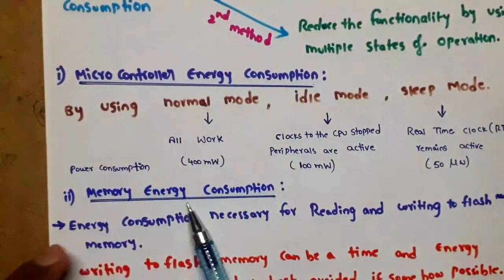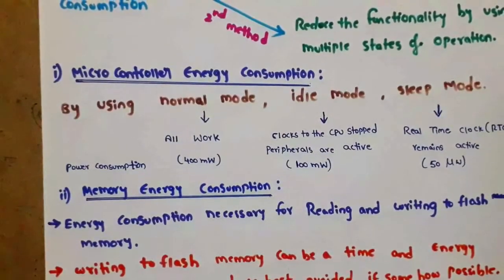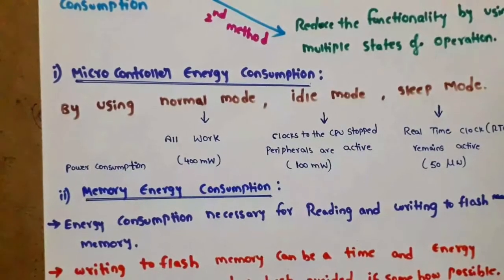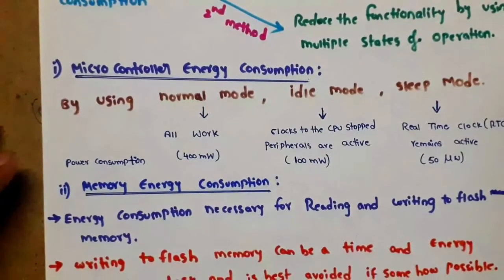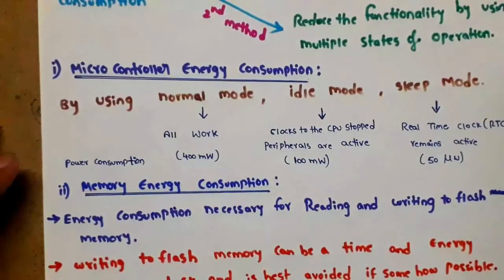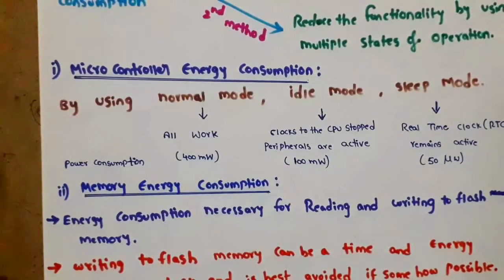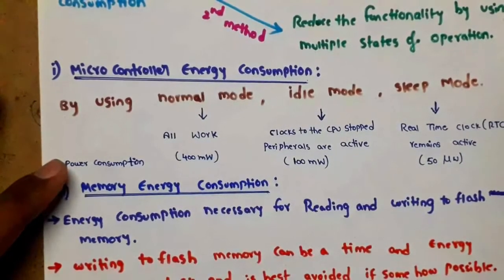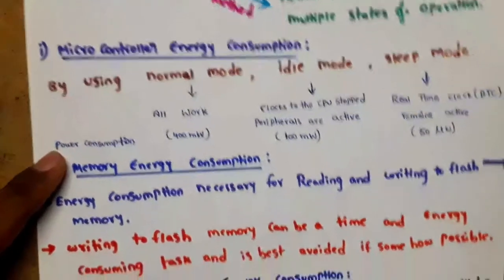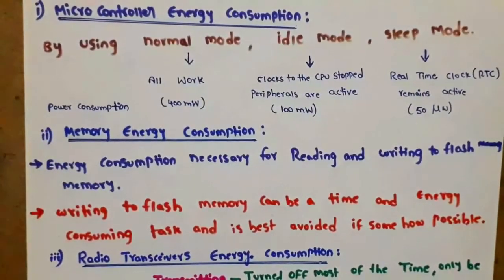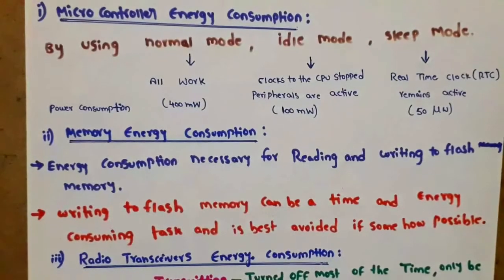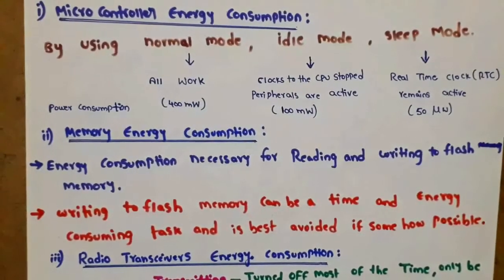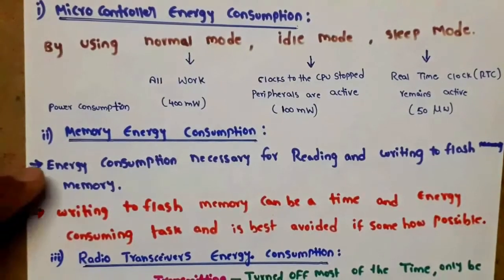For memory energy consumption, if we use RAM or ROM, power consumption is high. Instead, we can use flash memory for read and write operations. However, writing to flash memory takes time and consumes energy, so writing should be avoided when possible to save energy.